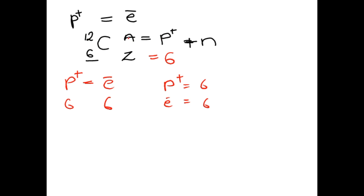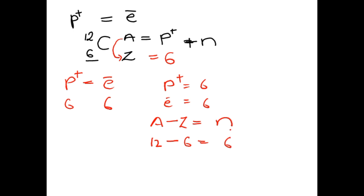To find the number of neutrons, we use the formula: N = A minus Z, that is, atomic mass minus atomic number. For carbon, atomic mass is 12 and atomic number is 6, so 12 minus 6 equals 6. Carbon has 6 neutrons.